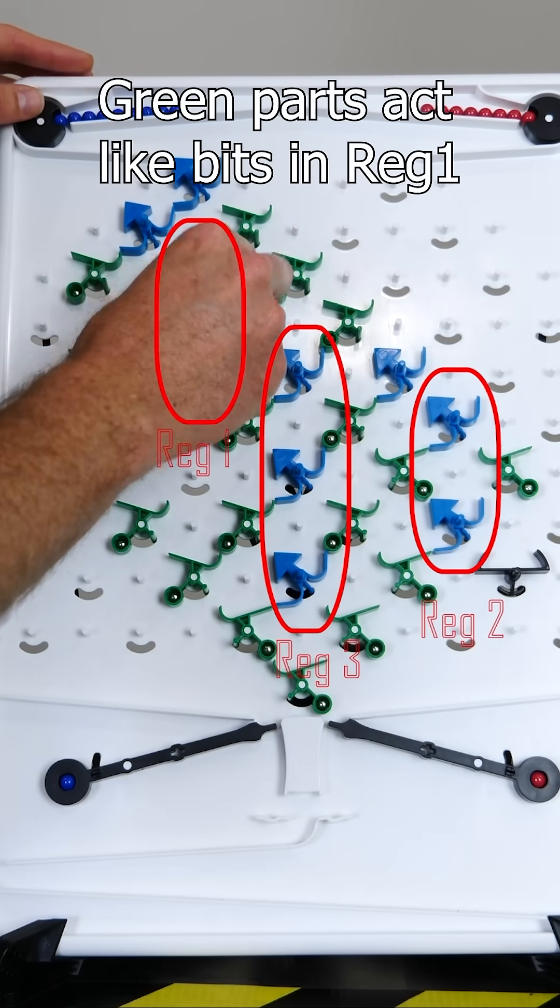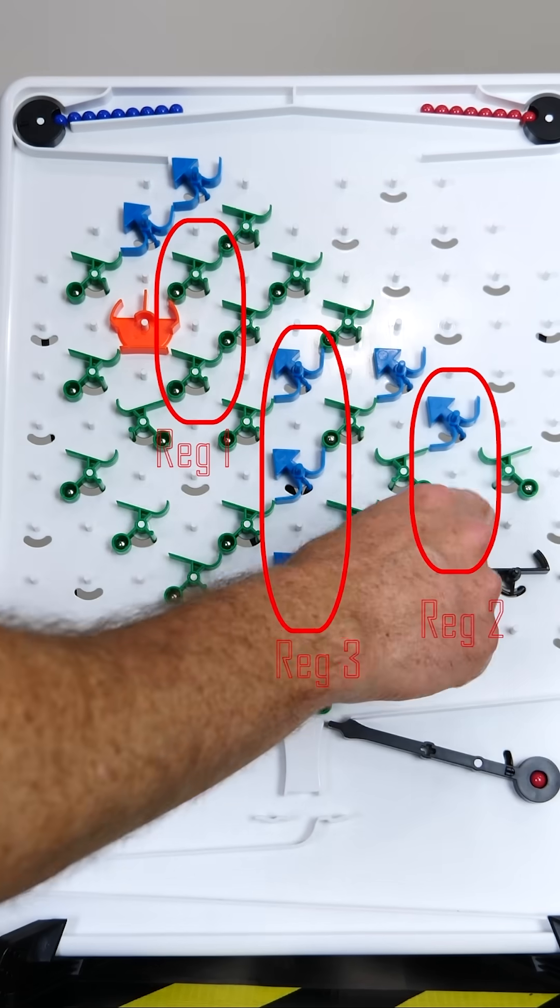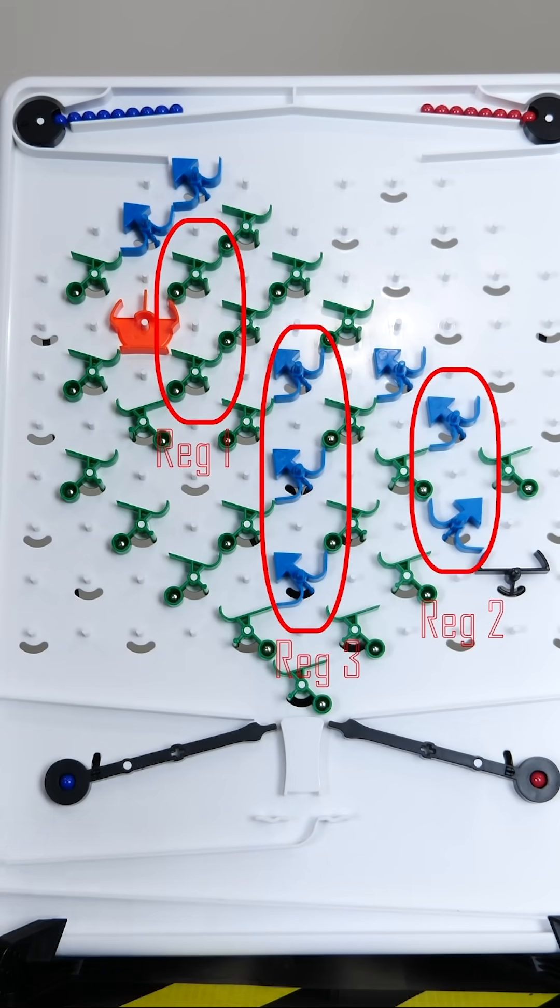If we use three registers, we can even multiply two numbers together. So this is 3 times 2. Let's see what the result is.